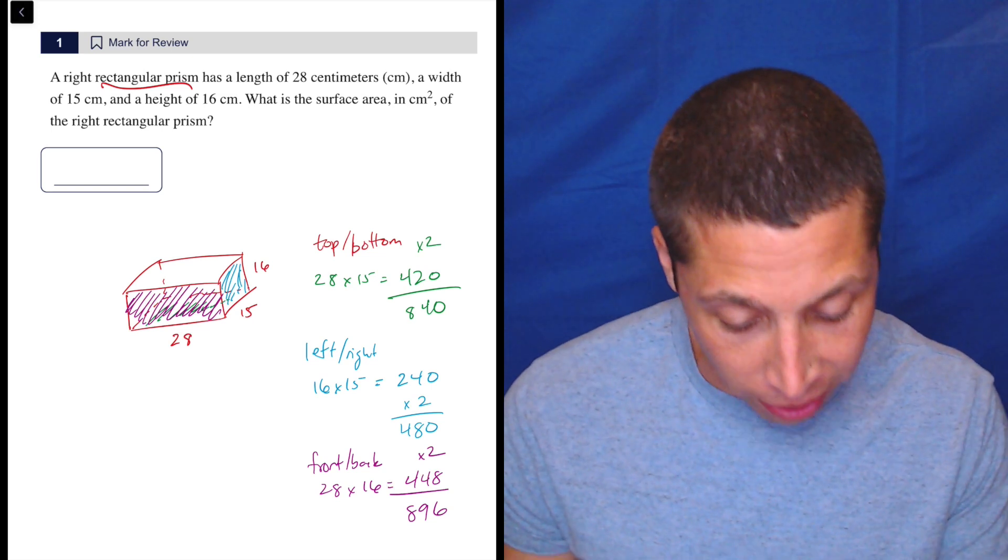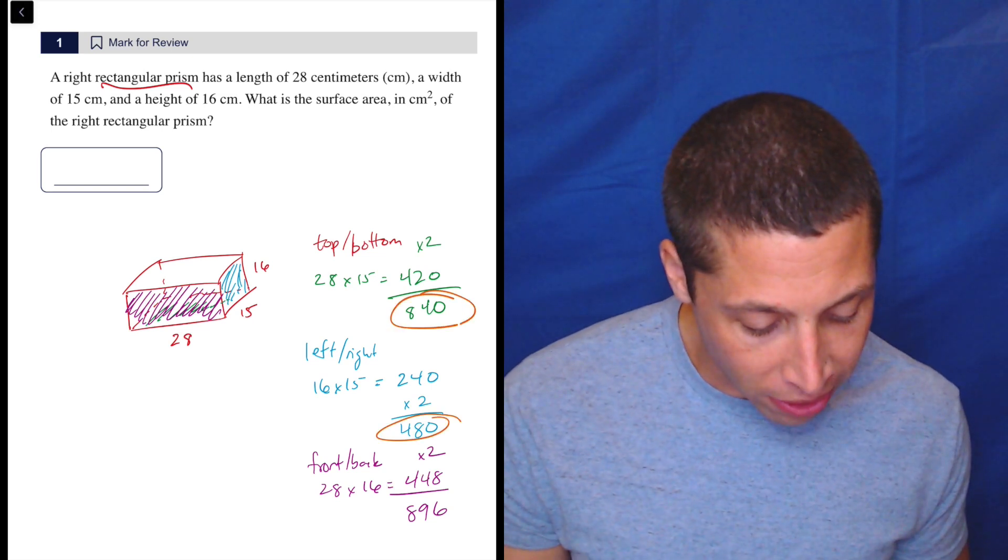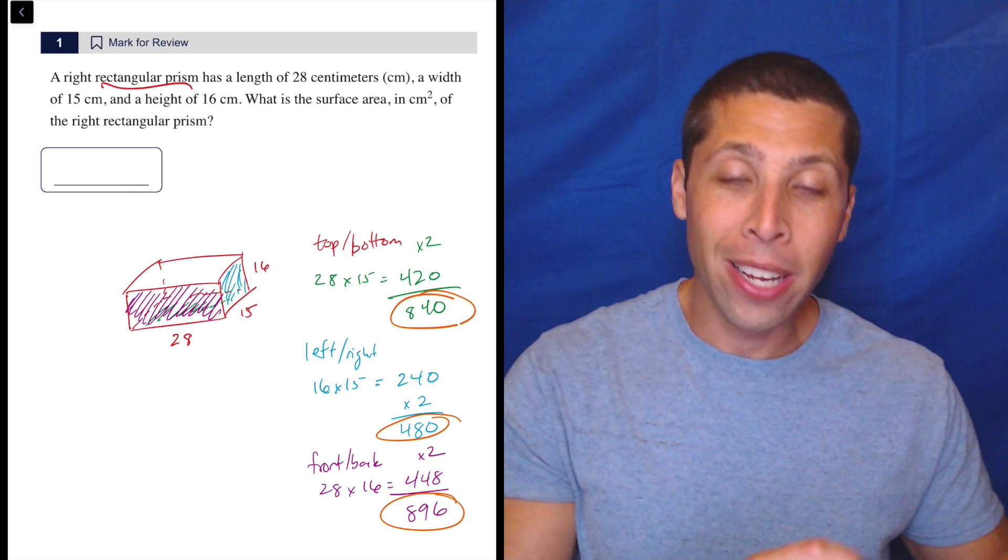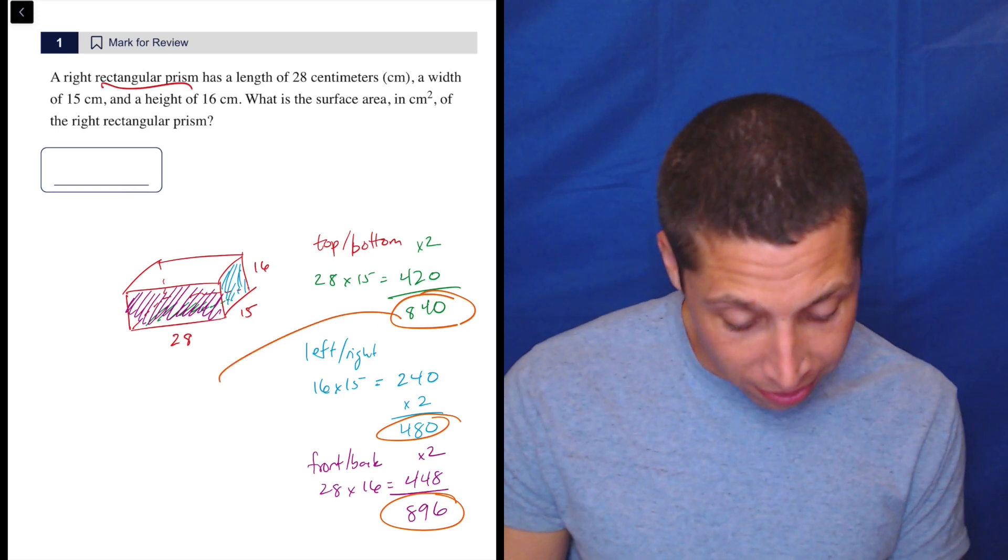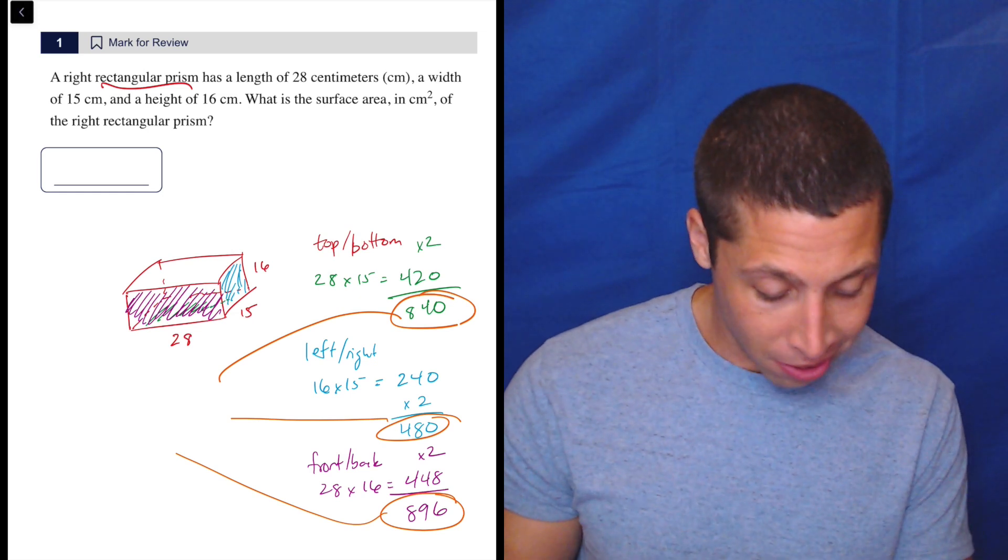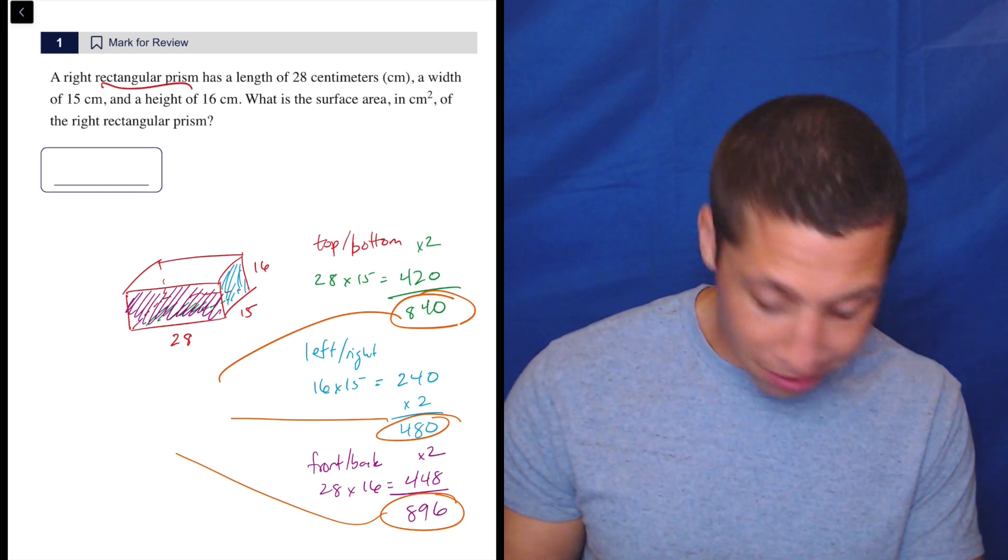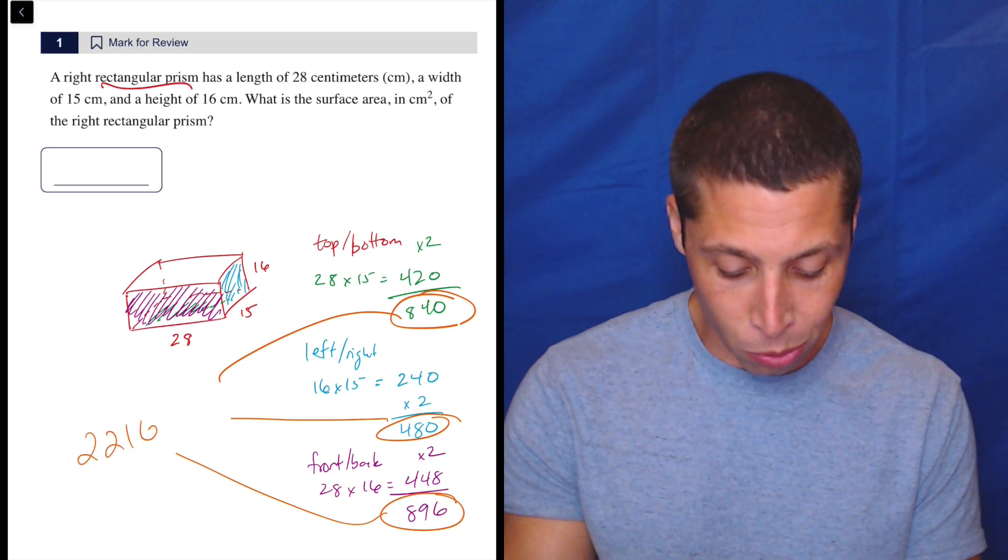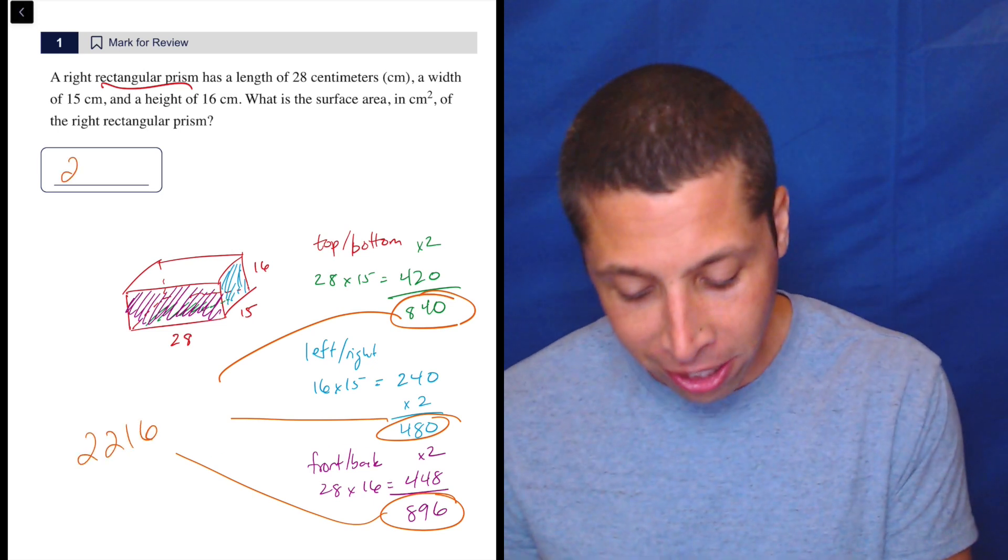Now, what is the surface area? It's just add up all the faces. So we found that this is already sets of two. And so there's six total faces. So here's three things. Let's just add them all up. And 840 plus 480 plus 896 is 2216. Is that the answer? Yes.